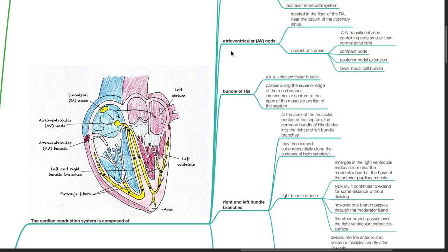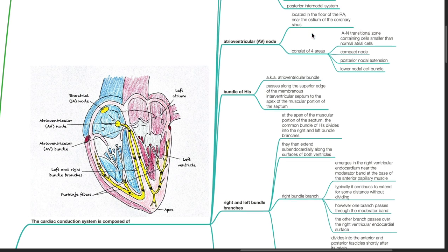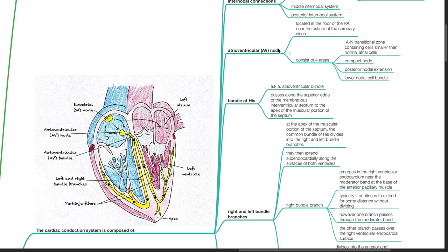The atrioventricular node is located in the floor of the right atrium near the ostium of the coronary sinus. The AV node consists of four areas: the AN transition zone containing cells smaller than normal atrial cells, the compact node, posterior nodal extension, and the lower nodal cell bundle.